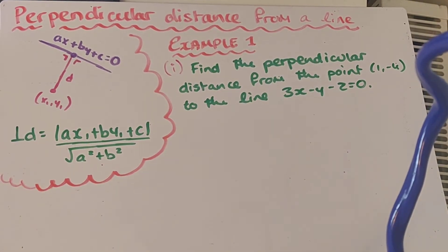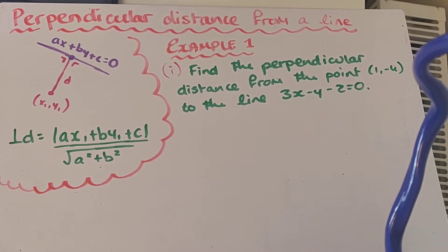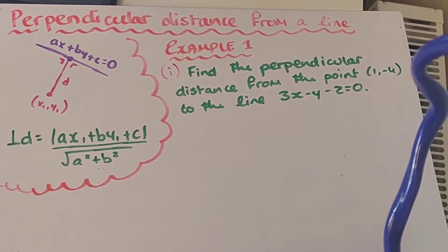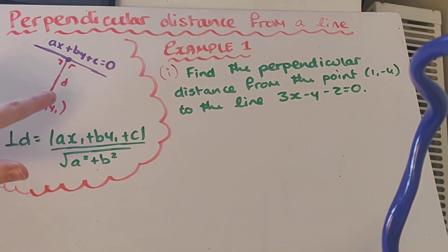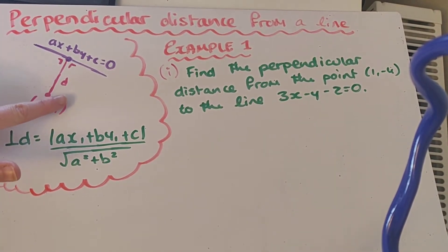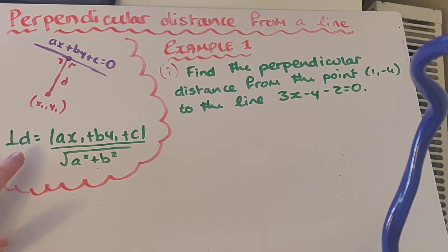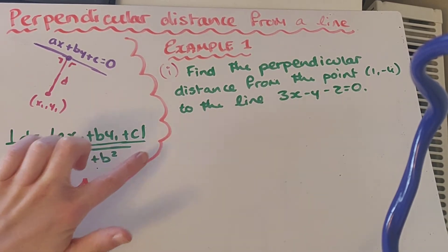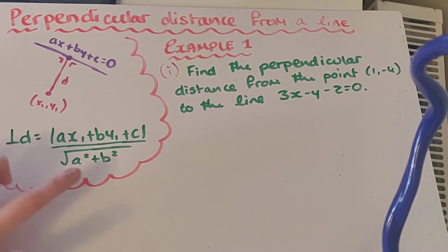Welcome back guys, and what we're going to be looking at in our tutorial today is another new formula called the perpendicular distance formula from a line. So if we have a line and a point that is perpendicular from it, we can find this perpendicular distance using the equation of a line and the coordinates of the point. Our formula for the perpendicular distance is the modulus of ax1 plus by1 plus c, all over the square root of a squared plus b squared.